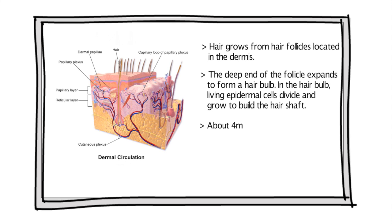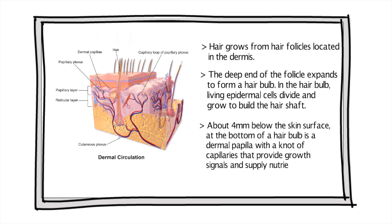About four millimeters below the skin surface, at the bottom of a hair bulb, is a dermal papilla with a knot of capillaries that provide growth signals and supply nutrients to the growing hair.